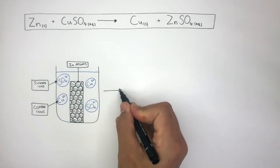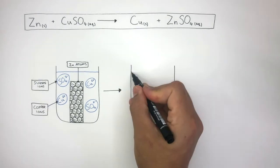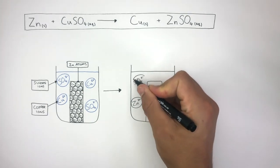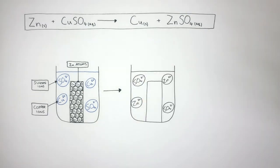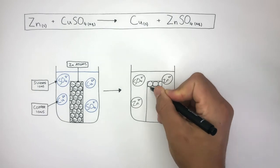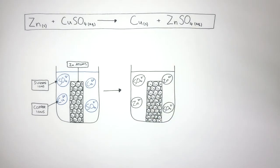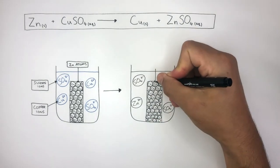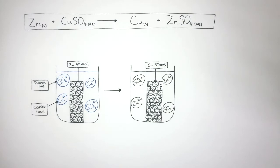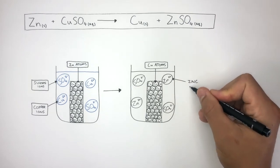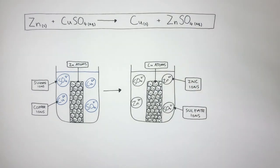Because this is a displacement reaction, where the more reactive element displaces the less reactive element, zinc displaces the copper from the copper sulfate, forming zinc sulfate, where the zinc is now a zinc ion with a charge of 2+. These circles in the particle diagram represent copper atoms, which have formed on the surface of the zinc. And now in the solution, we have zinc ions and sulfate ions, as the solution is now zinc sulfate, which is colorless.